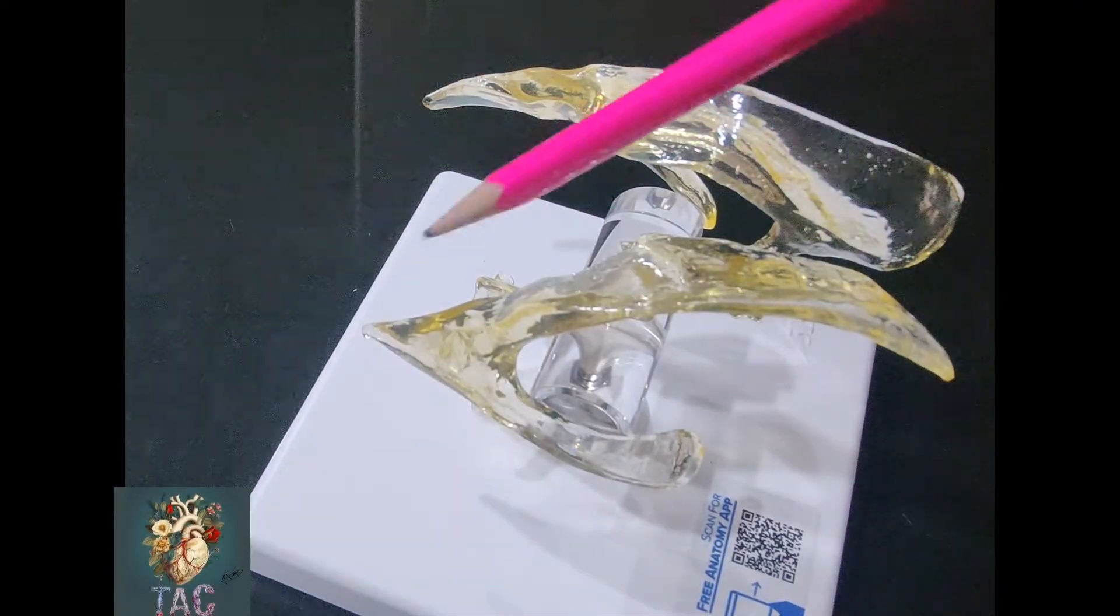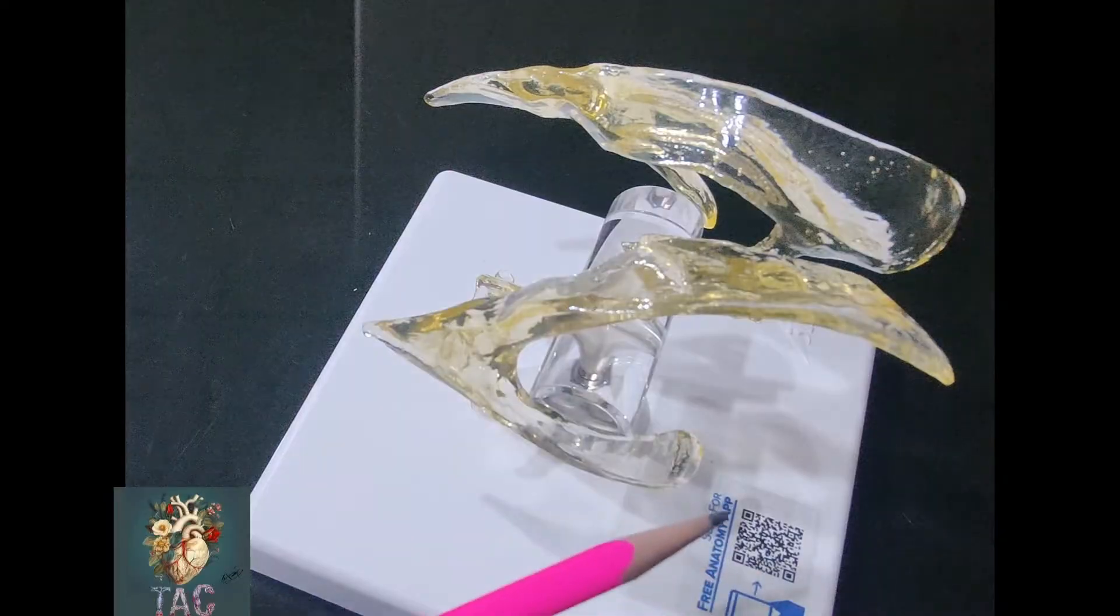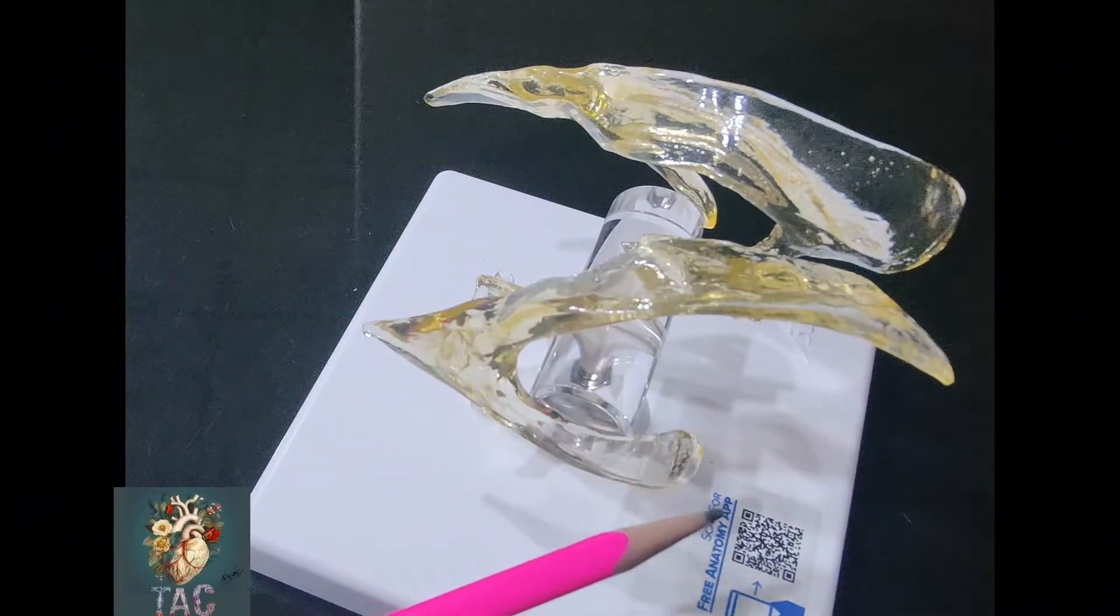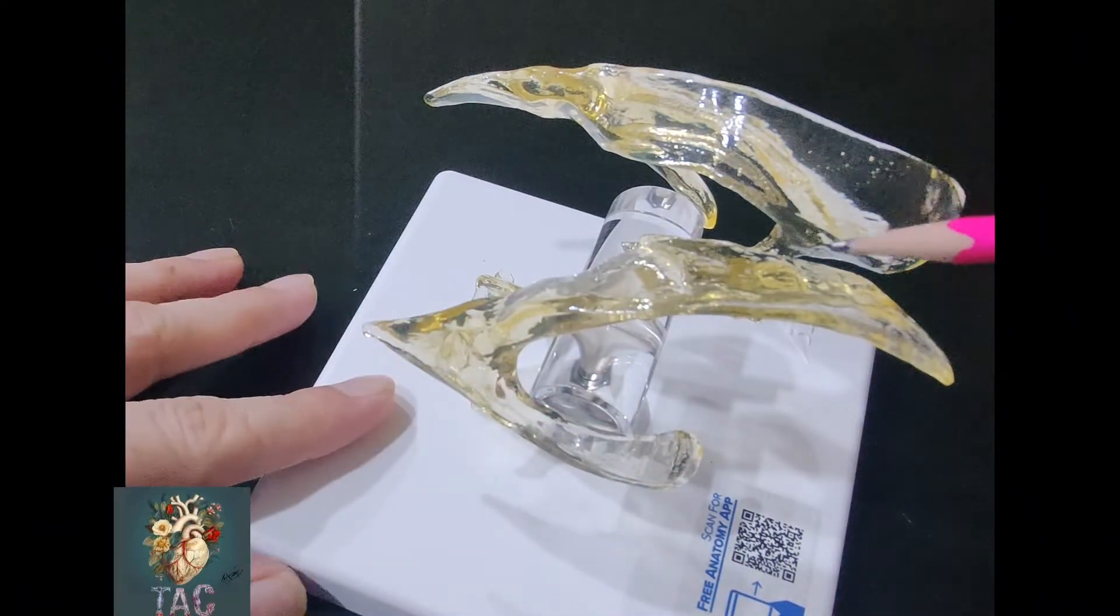The frontal horn of the lateral ventricle, the occipital horn of the lateral ventricle, and the temporal horn of the lateral ventricle. These two lateral ventricles are